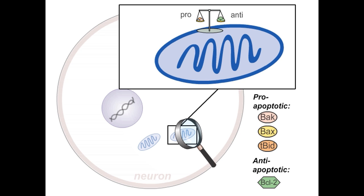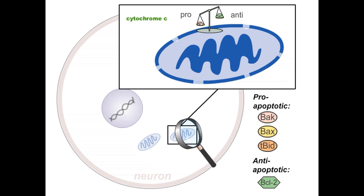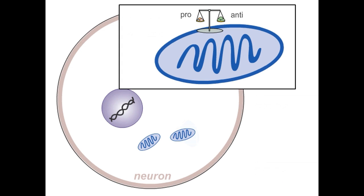If that balance is shifted, this can cause morphological changes to the mitochondrial membrane, allowing the release of cytochrome C and other substances that induce apoptosis.